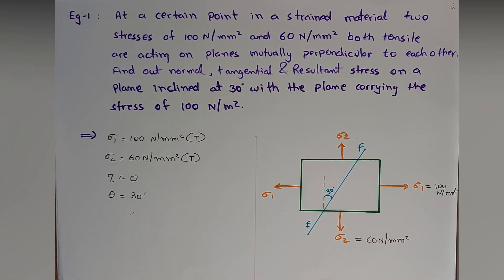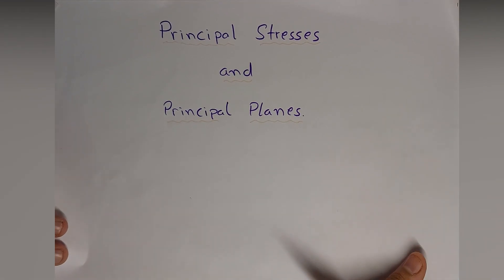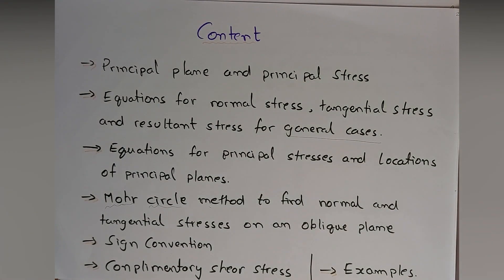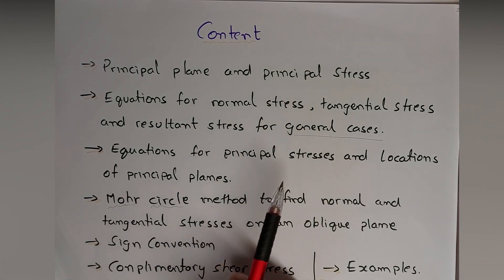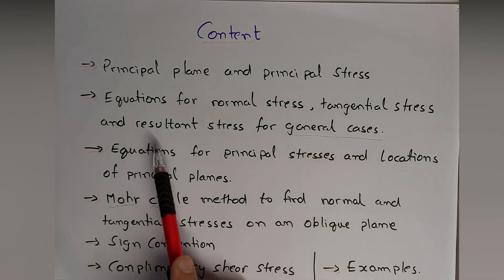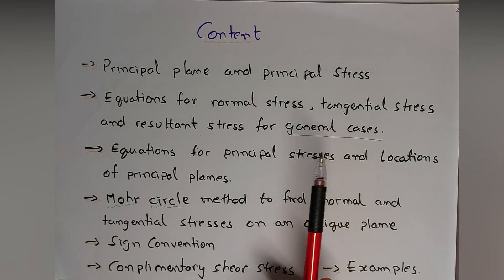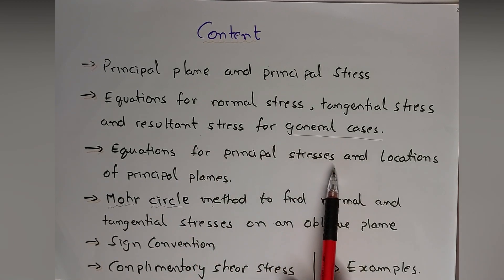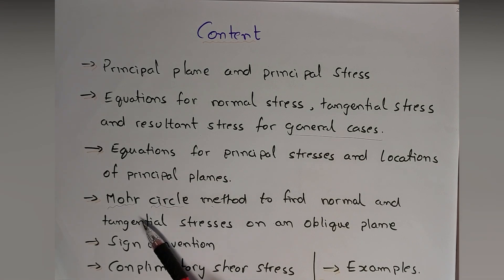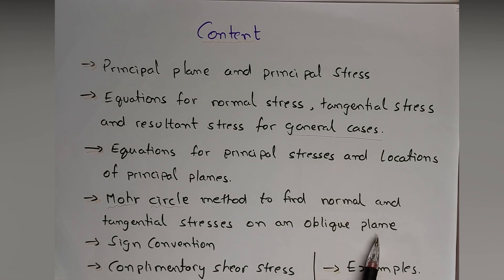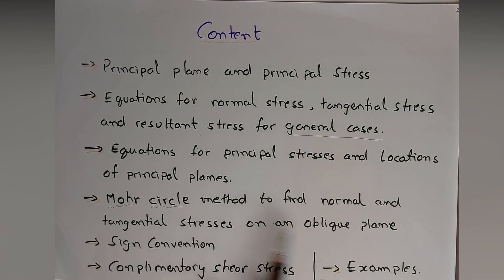Hello friends, welcome to the seventh part of the topic Principal Stresses and Principal Plane. Till now we have understood all content in this module: principal plane and principal stresses, equations for normal stress, tangential stress and resultant stresses for all general cases. We saw equations for principal stresses and location of principal planes, then Mohr's circle and how it is useful to find normal and tangential stresses on an oblique plane, sign conventions, numerical problems, and complementary shear stresses.